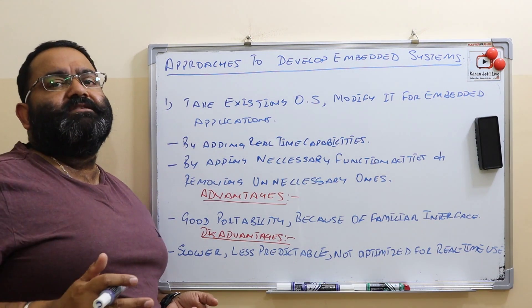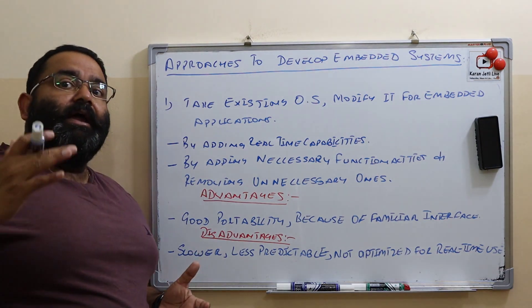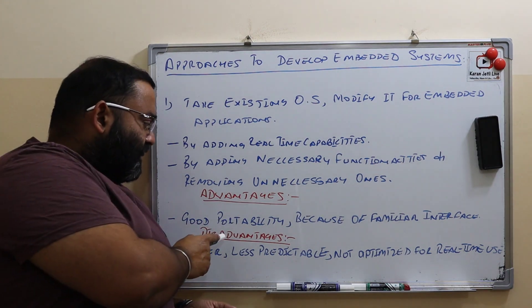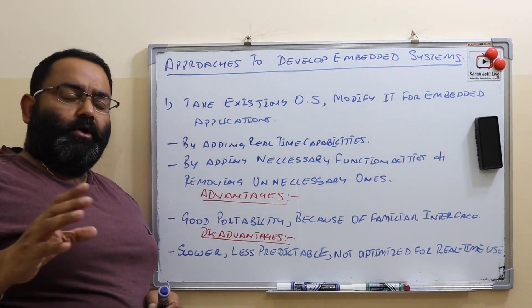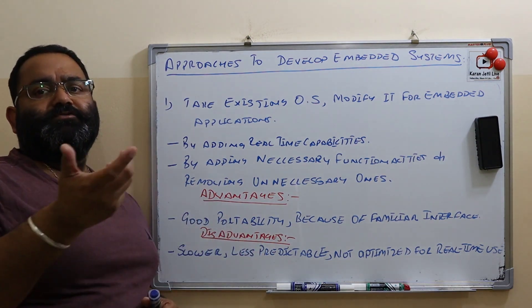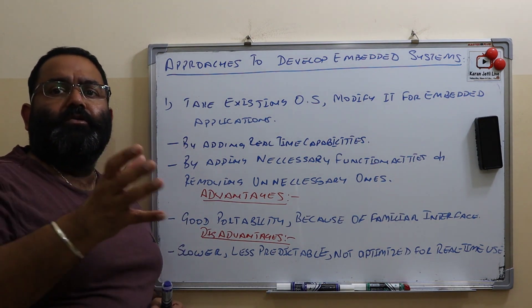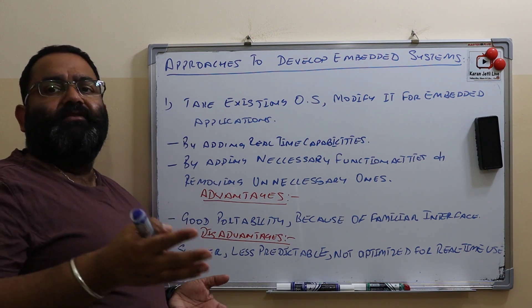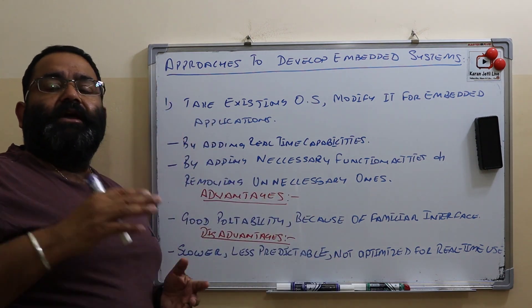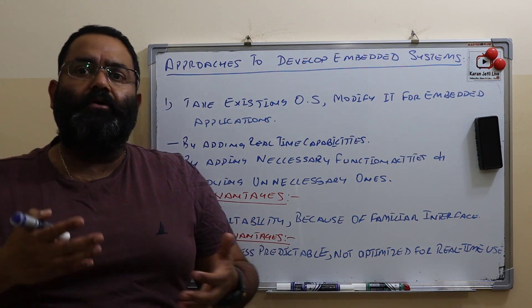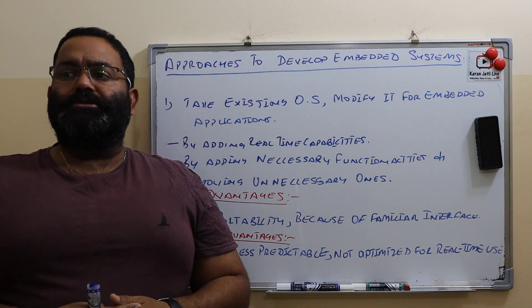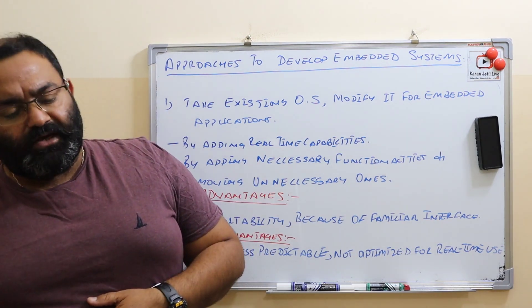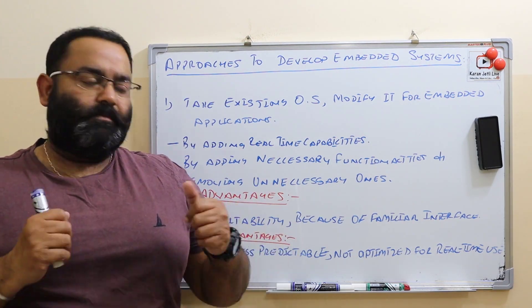What are the advantages of modifying an existing operating system for embedded applications? Good portability. Normal operating systems run on many different platforms and multiple different architectures, so they provide very good portability. The hardware interfaces and software interfaces of the normal operating system are familiar - we already know them and are using them - which makes them very portable.